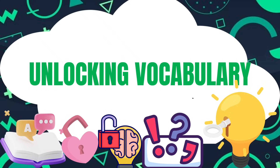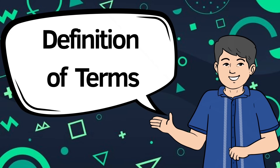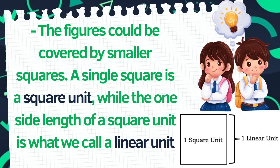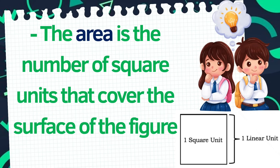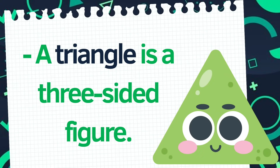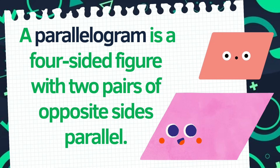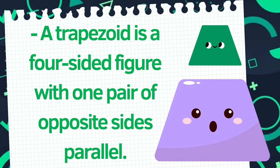But first, let's unlock our vocabulary for this lesson. The figures could be covered by smaller squares. A single square is a square unit, while the one side length of a square unit is called a linear unit. The length is the number of linear units of the longer side, while the width is the number of units of the shorter side. The area is the number of square units that cover the surface of the figure. A triangle is a three-sided figure. A parallelogram is a four-sided figure with two pairs of opposite sides parallel. A trapezoid is a four-sided figure with one pair of opposite sides parallel.